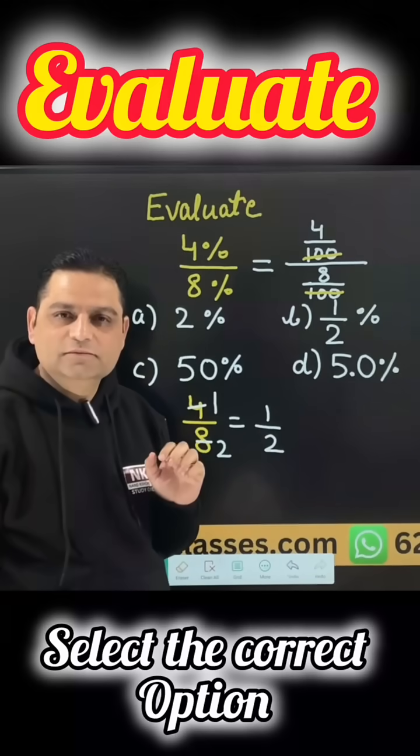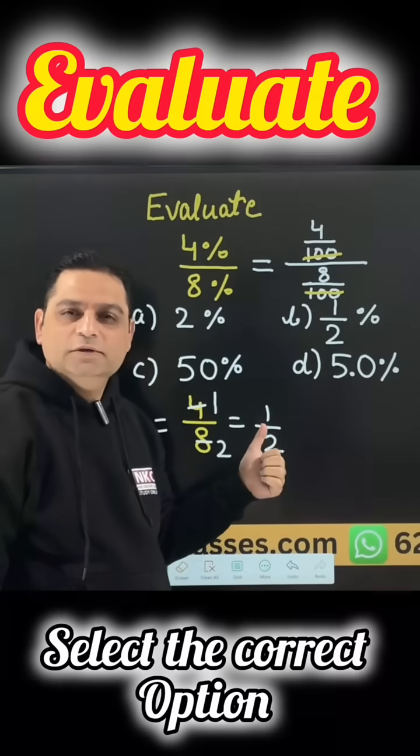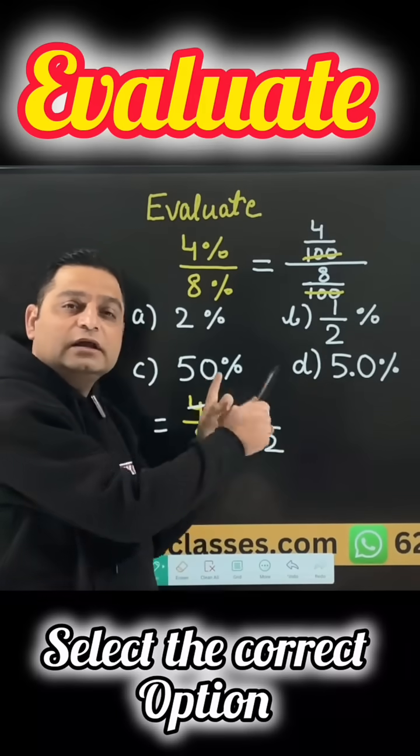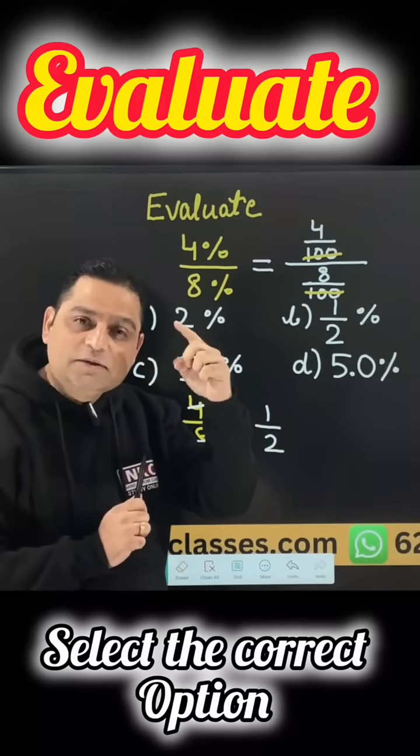is the correct option. But dear, do remember this is only 1 over 2. This is not 1 over 2 percent. We have four options where everywhere the percent sign is there. That means I need to recall the concept